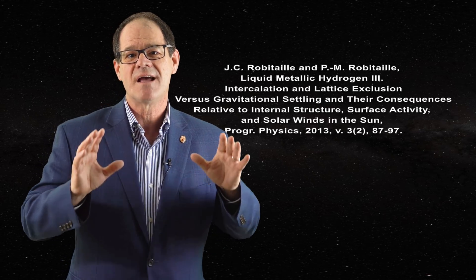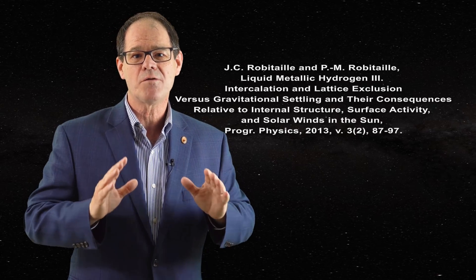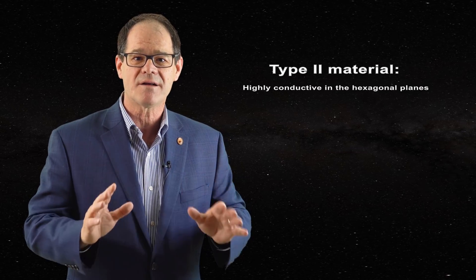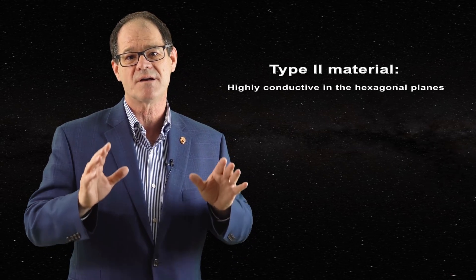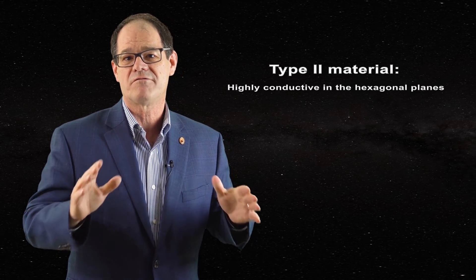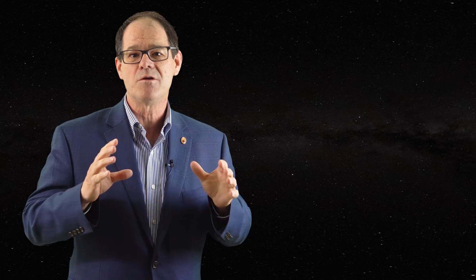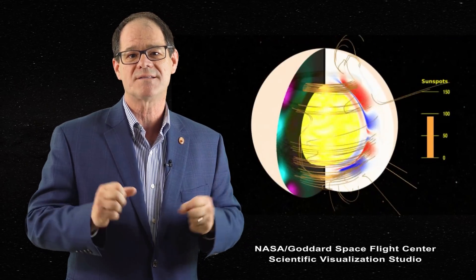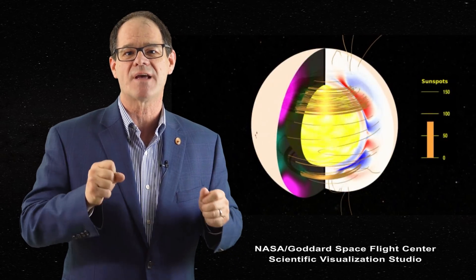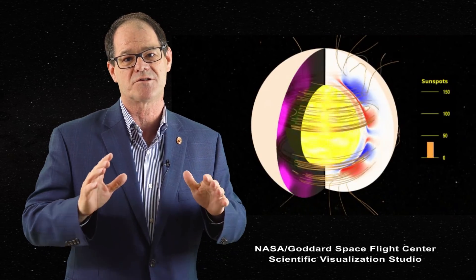Lattice structure can be a key determinant of behavior of an object. For those interested in the electrical properties of the sun, type 2 materials should be highly conductive in the planes because the presence of electronic conduction bands exists in this region. Conversely, solar materials should be insulating in the intercalate zones. This can be useful in current flow and dynamo behavior within the sun. Organized electrical currents require both conductors and insulators. This is a significant advantage of the liquid metallic hydrogen solar model, which is not shared by gaseous models.